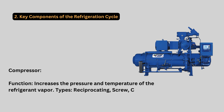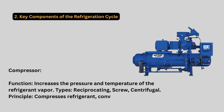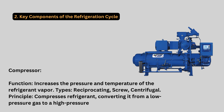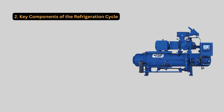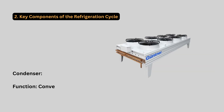Condenser. Function: converts refrigerant vapor into liquid. Types: air-cooled, water-cooled, evaporative. Principle: radiates heat to the surroundings, causing the refrigerant to condense.